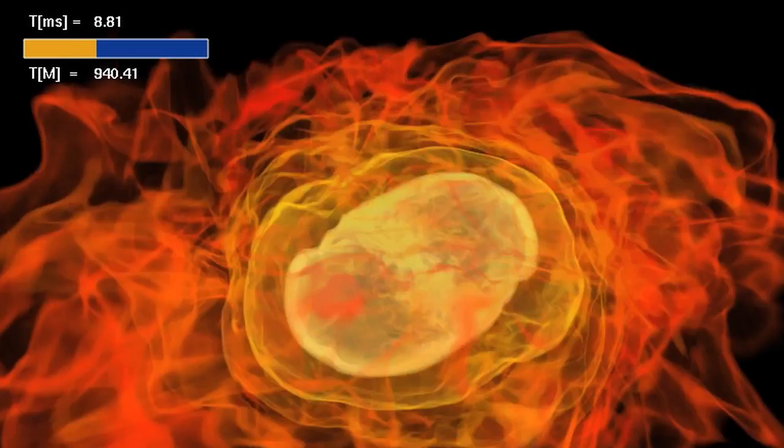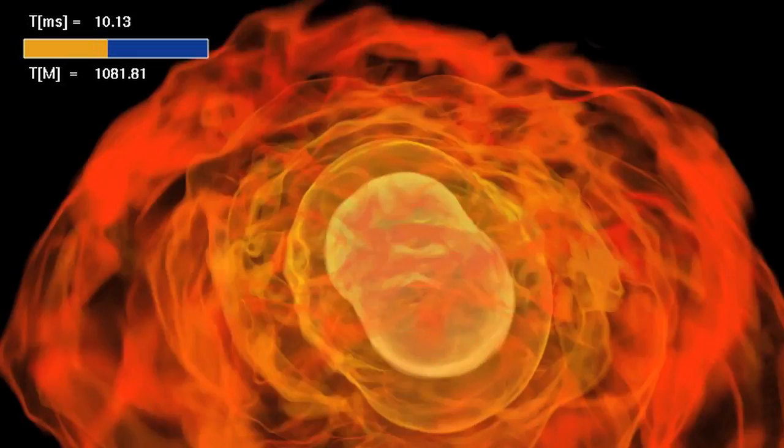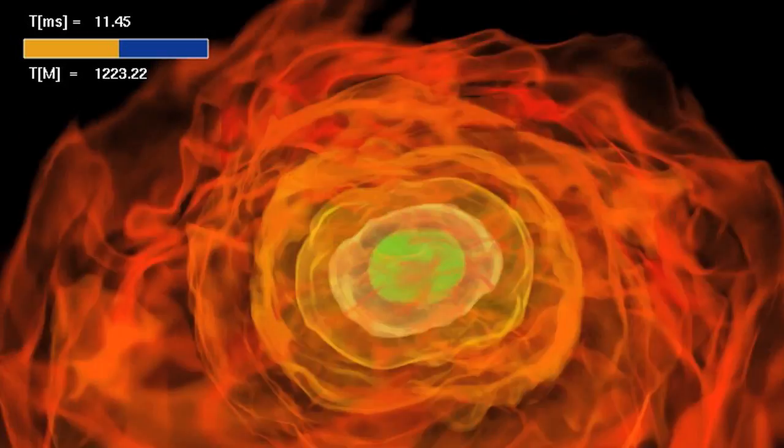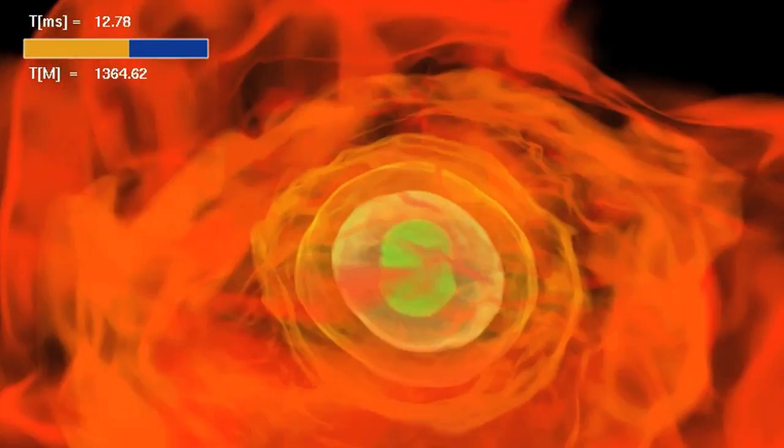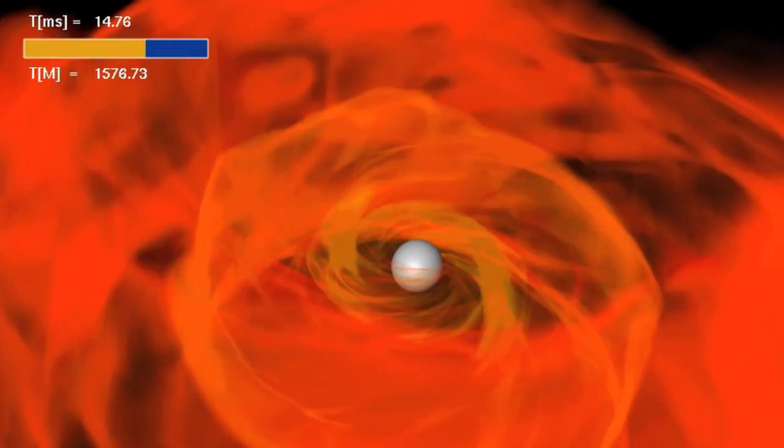Now, the simulations reveal the middle step of the process: how the merging star's magnetic field organizes itself into outwardly directed components capable of forming a jet.